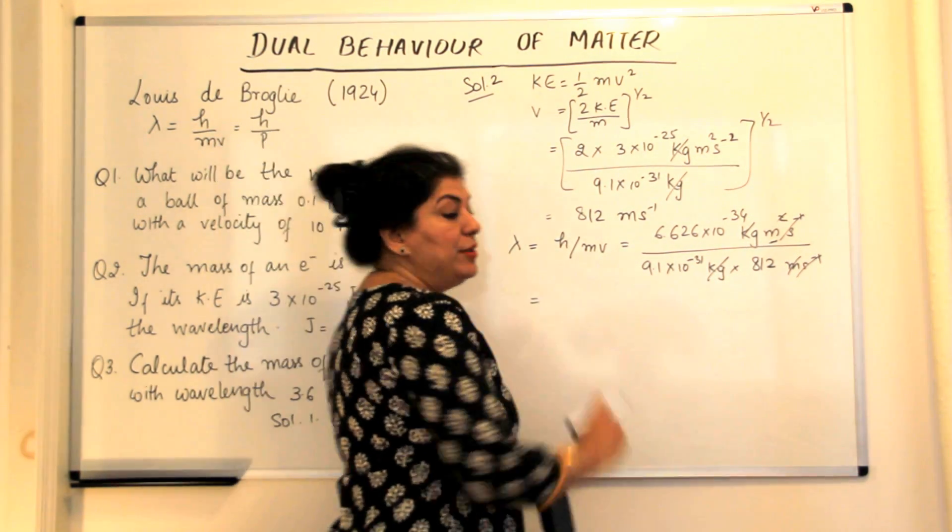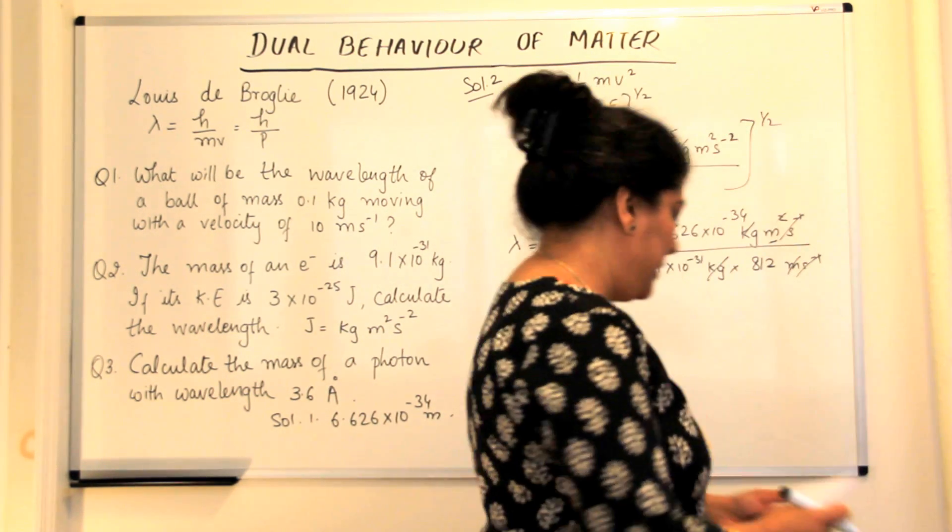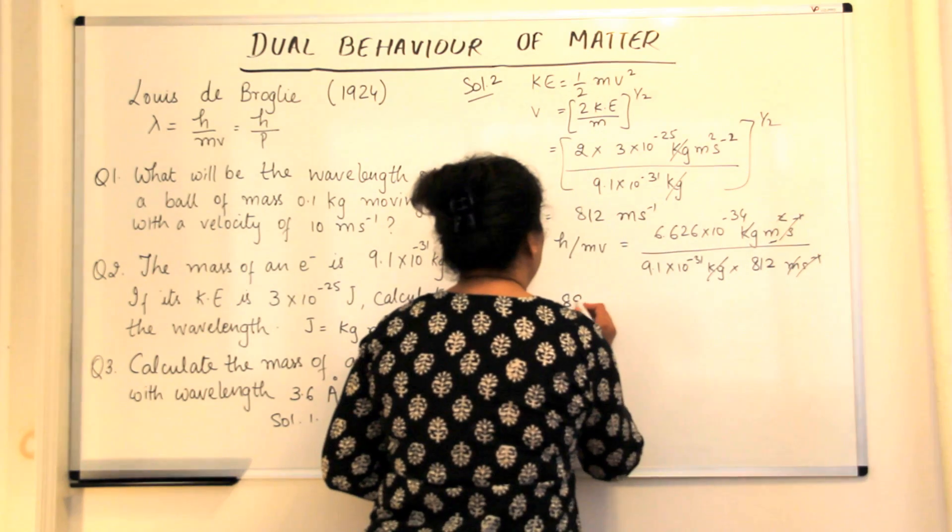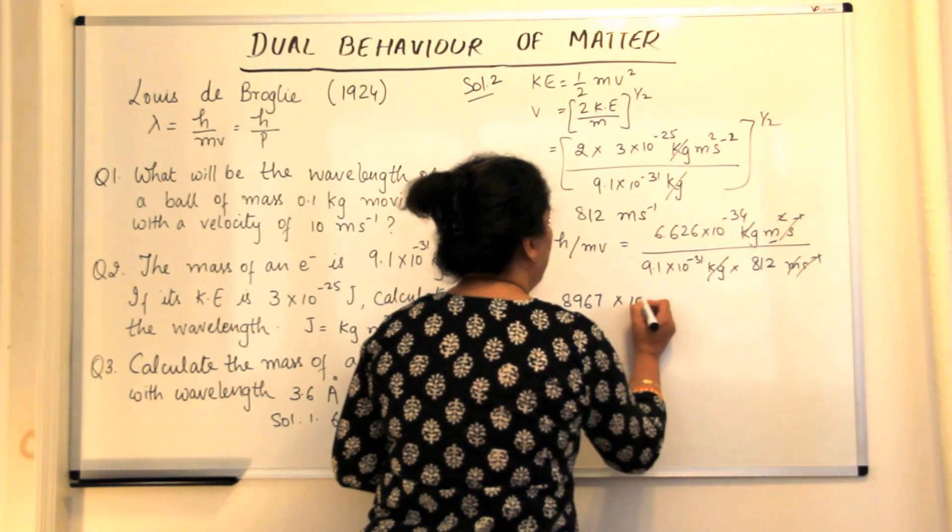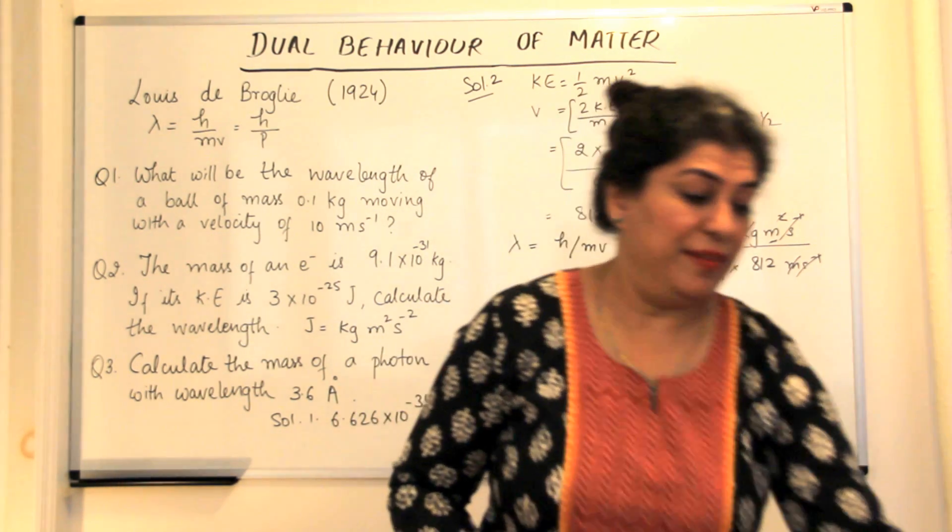Again, we've plugged in the right values. So what would the answer when you solve the numerical part? You will get the answer 8967 into 10 to the power minus 10 meters would be the wavelength.